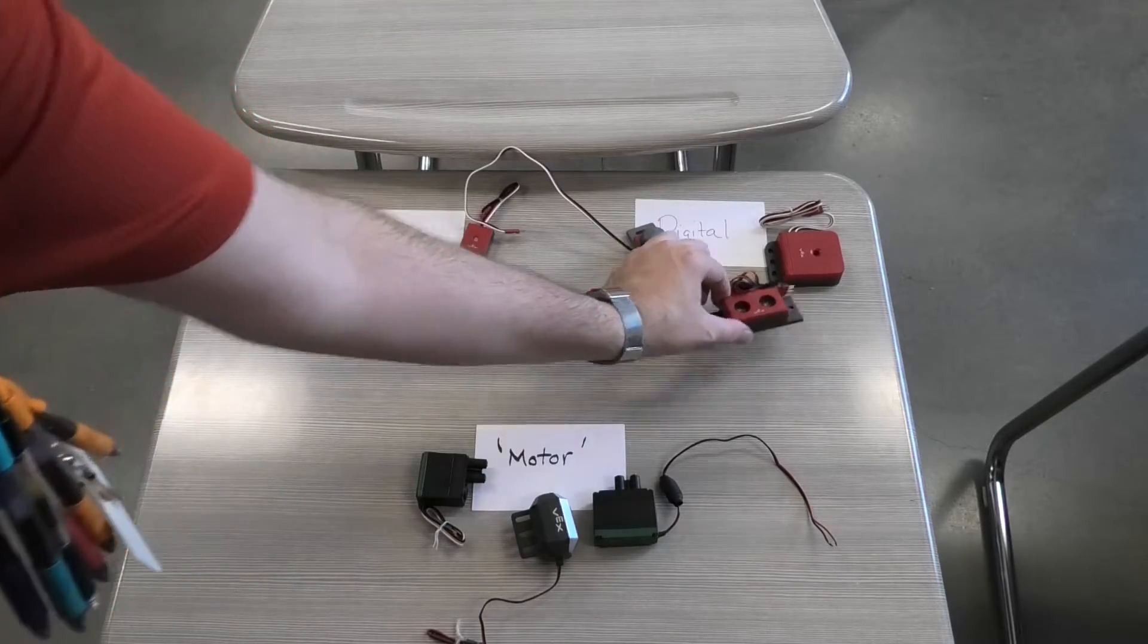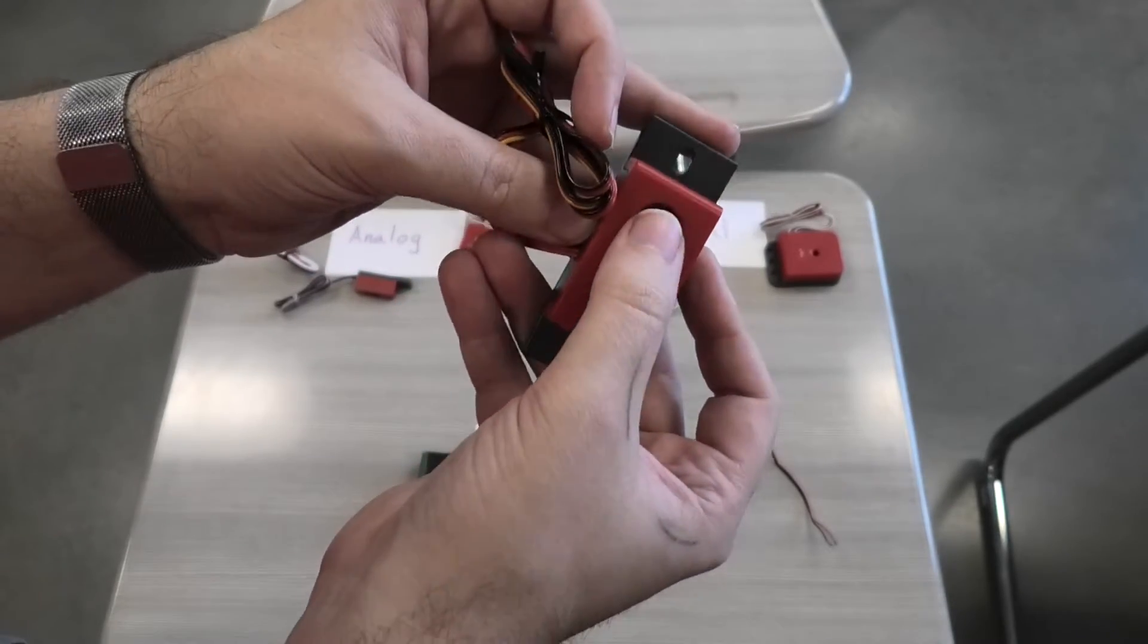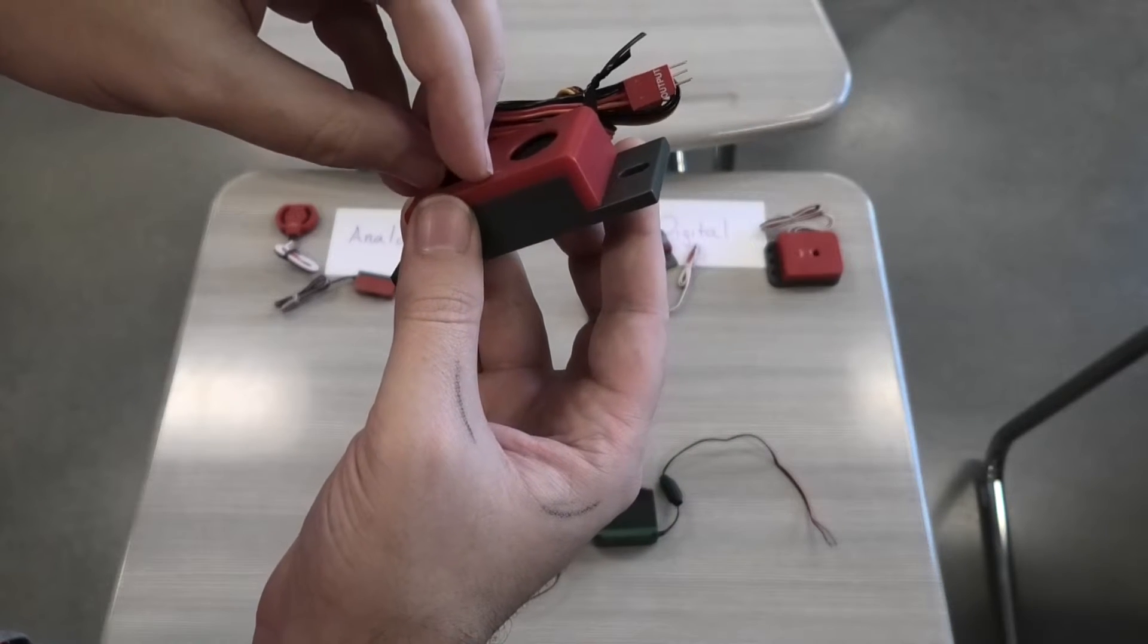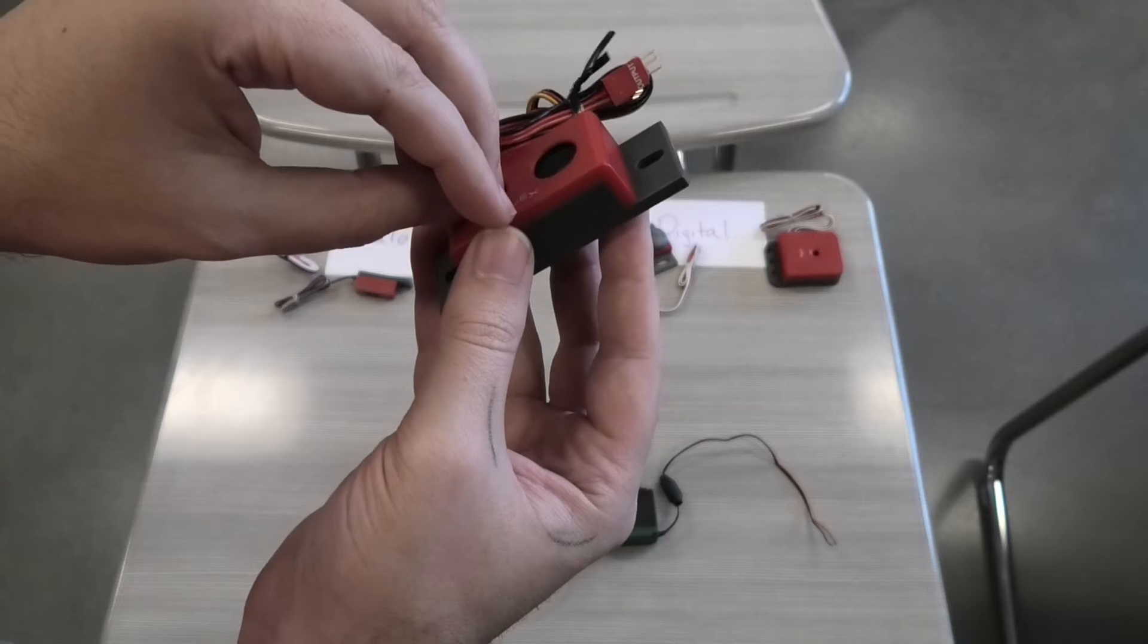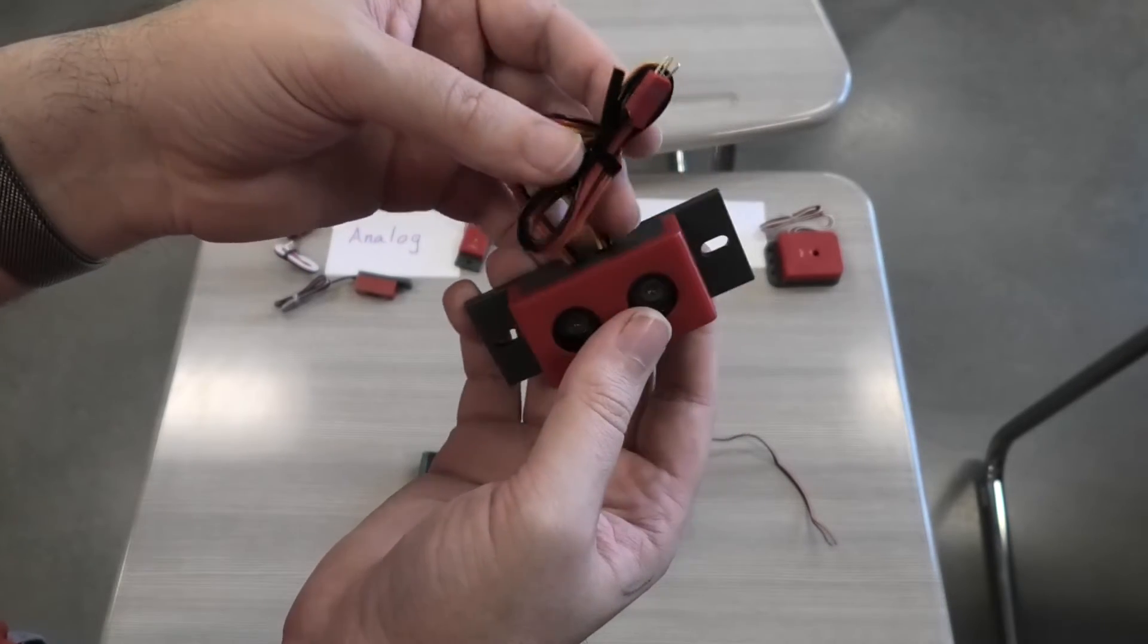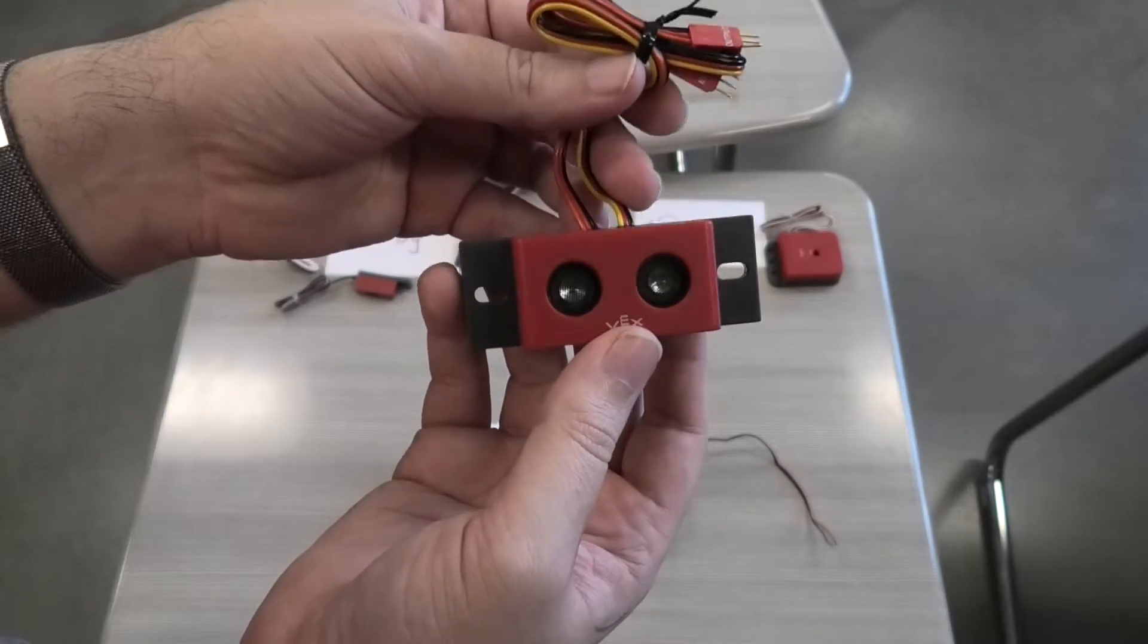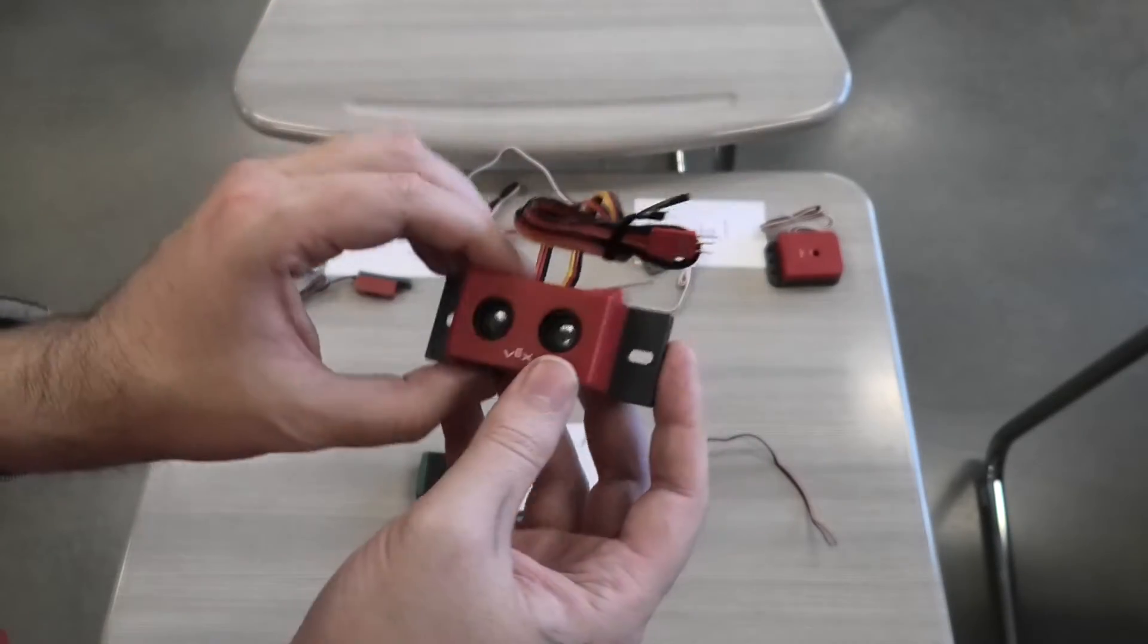The same thing happens with the rangefinder. This one works using echolocation. There's two speakers right here. One of the speakers will emit sound, and that sound will bounce off—it works like a bat or a dolphin. It will hit and then it will bounce back, and it records the difference between the timing. This is the timing between when it sends the sound and then whenever it receives the sound again, and it gives you an estimation of the amount of distance that you have. Once again, with this one, it has an input and an output line, so you're going to have to plug in both the output and the input side by side to each other. You've got to make sure that both of these are plugged into the Cortex, and we'll have to look up the documentation to see which one goes first and which one goes second.